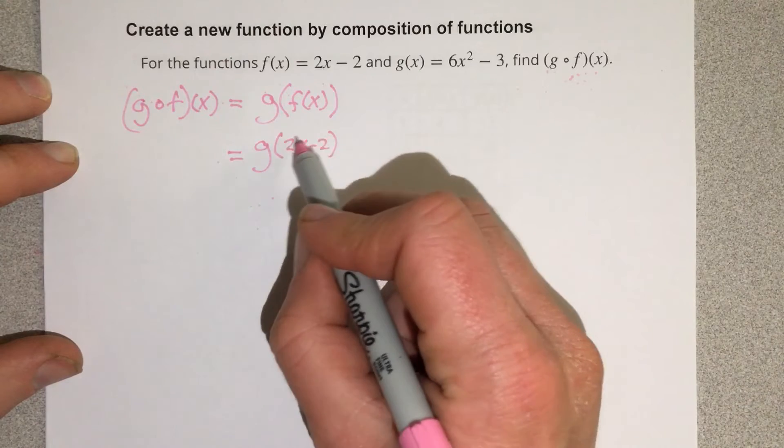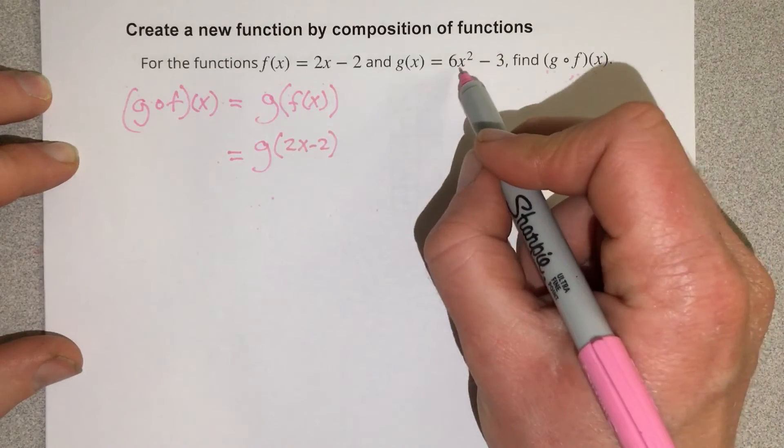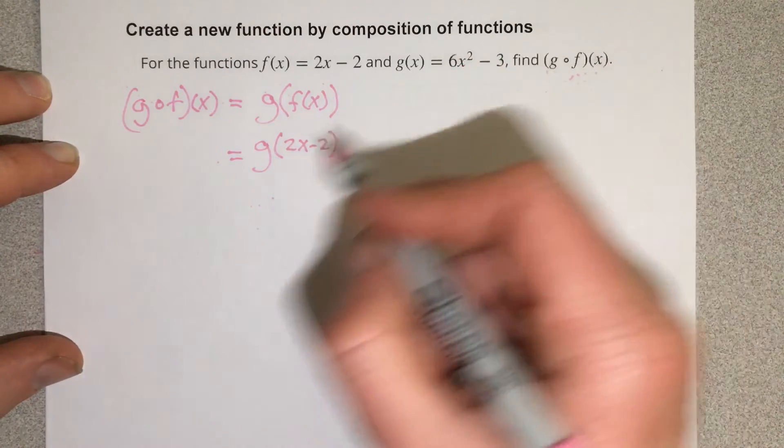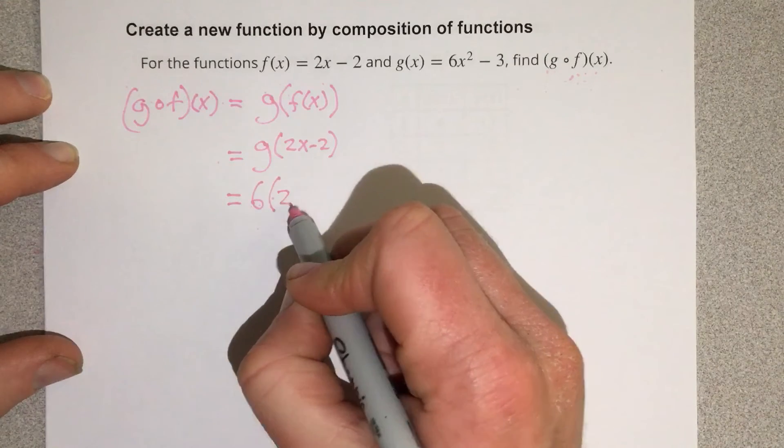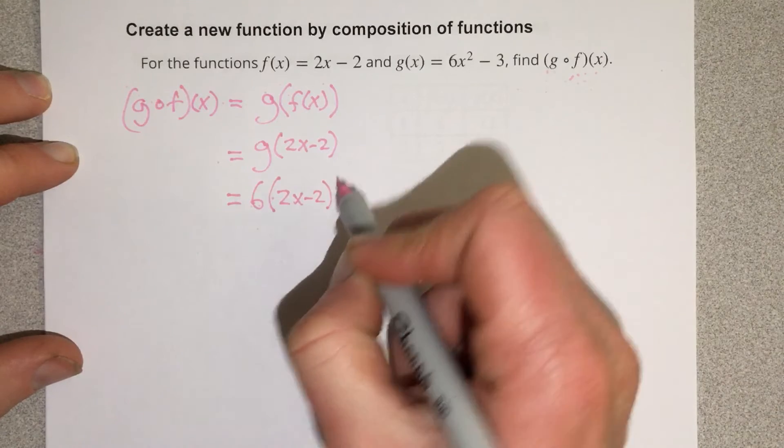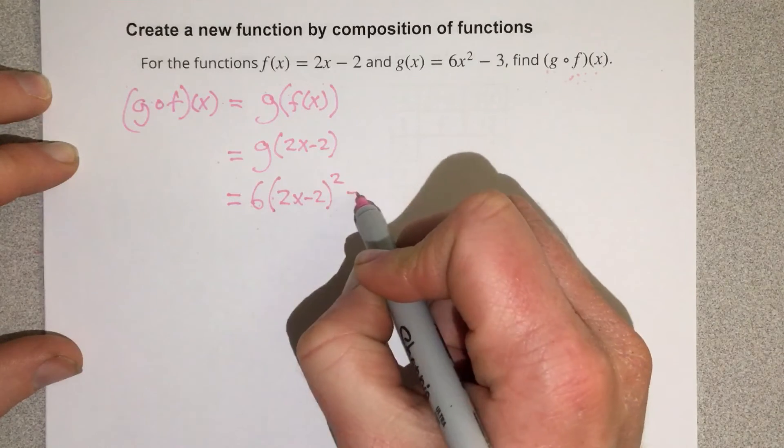We're going to take 2x minus 2 now, and we're going to input it in for the x values in the g function. So we're going to get 6 with 2x minus 2 in the in for x being squared minus 3.